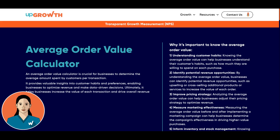Hello everyone and welcome to upGrowth. In today's session we will talk about our average order value calculator. But first, before diving into it, we'd like you to understand what AOV essentially is. An average order value tells you the average amount a customer spends on your website in a single purchase — it's like taking a snapshot of your customer's typical shopping behavior.